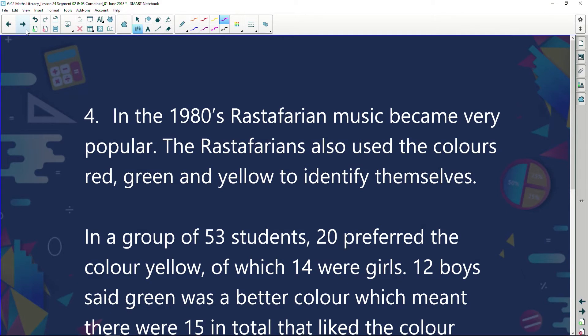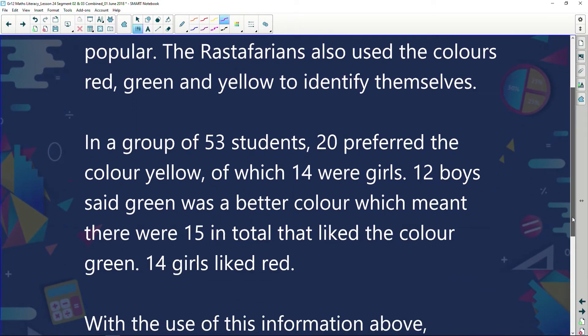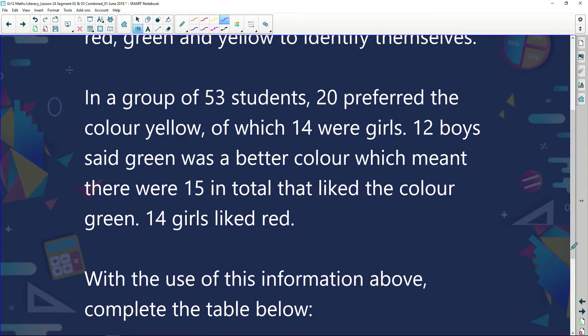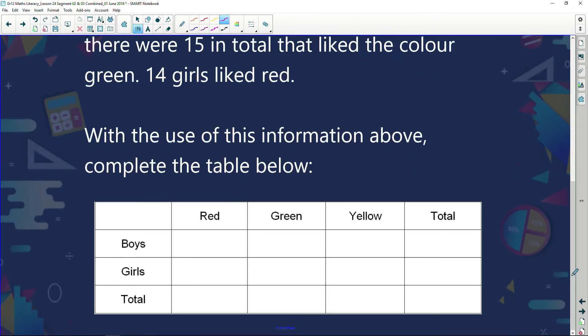In the 1980s, Rastafarian music became very popular. The Rastafarians used the colours red, green, and yellow to identify themselves. In a group of 53 students, 20 preferred the colour yellow, of which 14 were girls. 12 boys said green was a better colour, which meant there were 15 in total that liked the colour green. 14 girls liked red. With the use of this information above, complete the table below. So here is my table. It's got nothing in it. All our other tables had some figures and all we had to do was find the missing ones. This table's got nothing, but it has given us some information in the paragraph above.